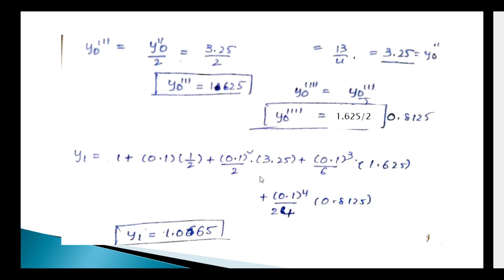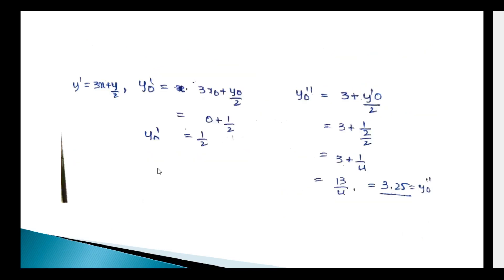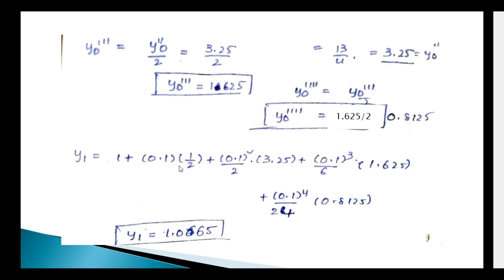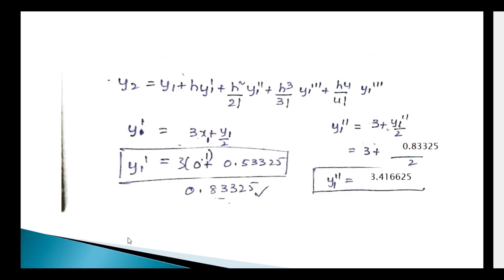Now substituting into the Taylor series formula: y₁ = 1 + 0.1×(1/2) + (0.1²/2)×3.25 + (0.1³/6)×1.625 + (0.1⁴/24)×0.8125. Solving, y₁ = 1.0665.